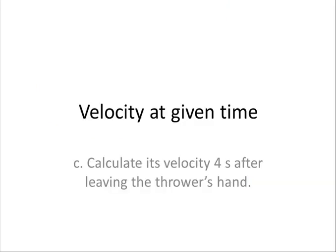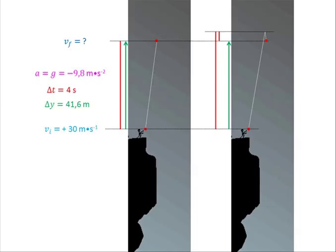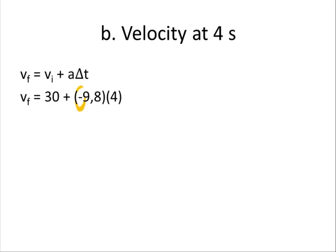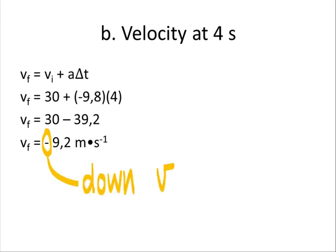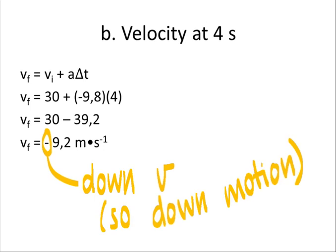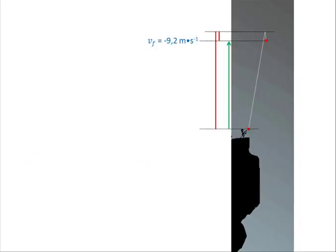This interval still refers to 4 seconds, but now we need to find the velocity at the end of those 4 seconds. The setup is the same as before — initial velocity 30 m/s, acceleration −9.8 m/s². We substitute values carefully, minding the minus sign for 9.8. The final answer has a negative value, meaning the velocity is in the downward direction, which tells us the object was moving downward at the end of this interval. This confirms which picture is correct.